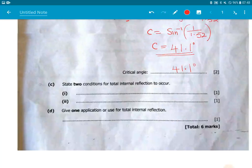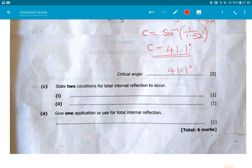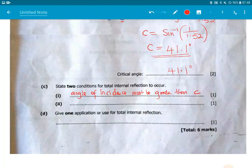The next one says, state two conditions for total internal reflection. For total internal reflection to occur, what conditions are needed? And here are the two conditions needed. Number one. Angle of incidence must be greater than C, than the critical angle. I don't have space, but for you, complete critical angle.